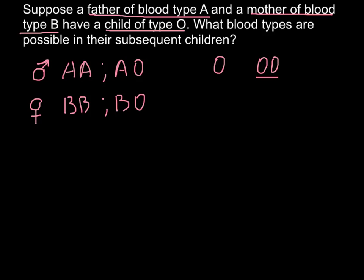So such a child should have both alleles O. So each of the parents should transfer one of the alleles O. So genotype would be OO, and this would produce phenotype O.